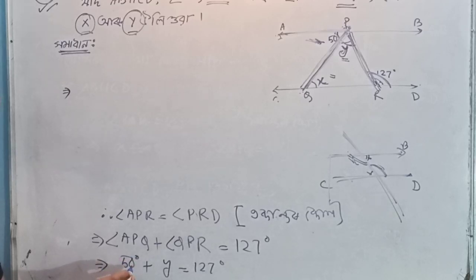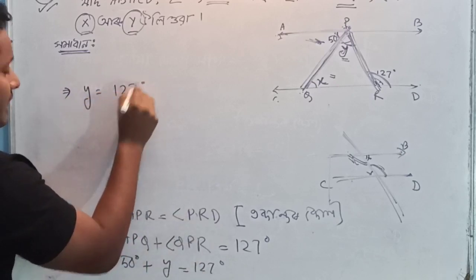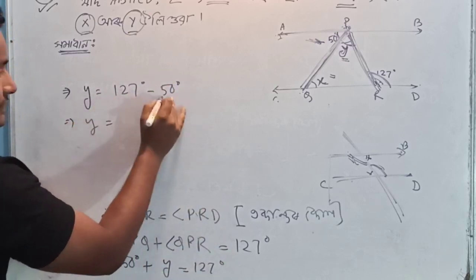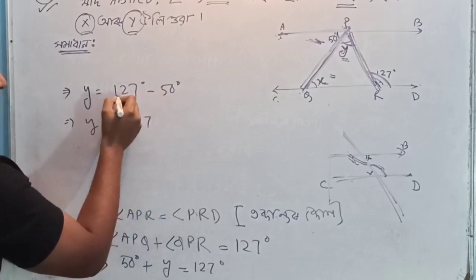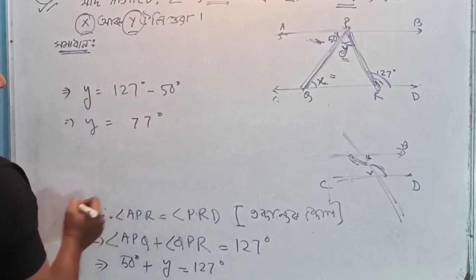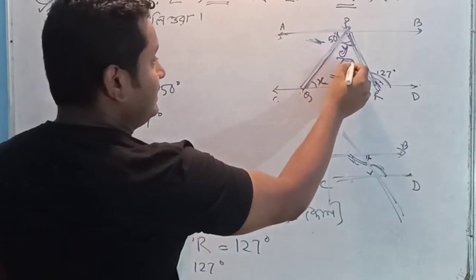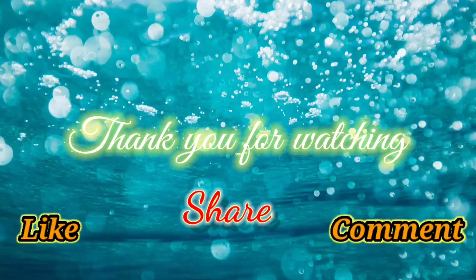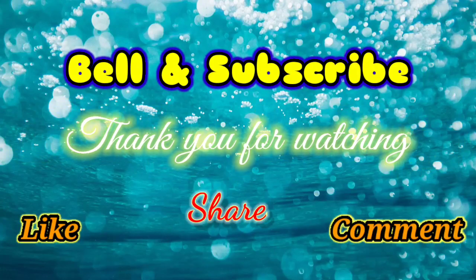y is equal to 127 minus 50 degrees. That means y equals 77 degrees. Thank you so much for watching, like, comment and share. If you like the video, subscribe to the bell icon and subscribe to the channel.